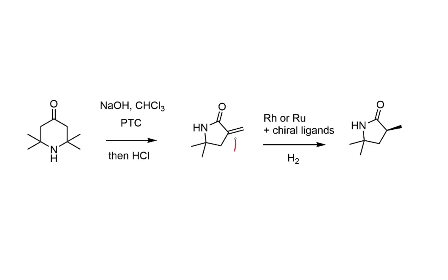An alternative approach to introduce the chirality involves enantioselective reduction of an exomethylene group using a metal catalyst with chiral ligands and hydrogen gas as the reductant. But the really interesting chemistry is how they arrive at the lactam intermediate.